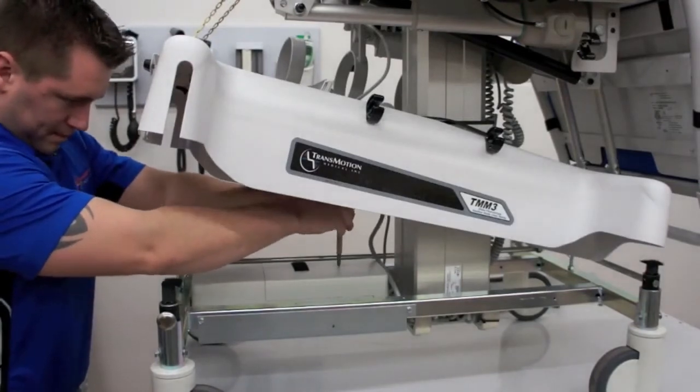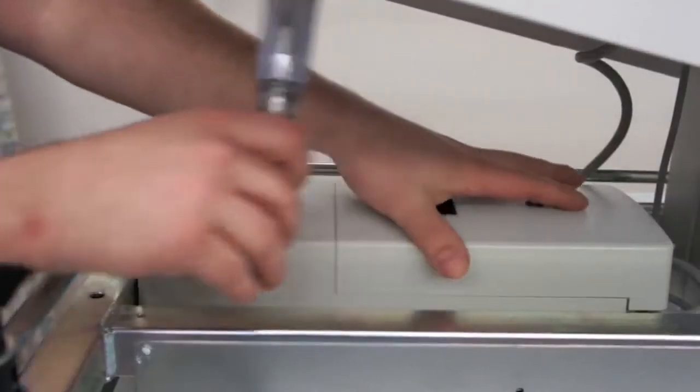Use your flat head screwdriver and turn to the unlock position, then remove the control box cover.